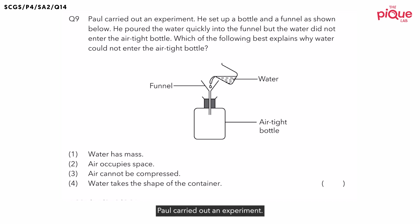Question 9. Paul carried out an experiment. He set up a bottle and a funnel as shown below. He poured the water quickly into the funnel, but the water did not enter the airtight bottle. So now the question is asking us, which of the following best explains why water could not enter the airtight bottle?